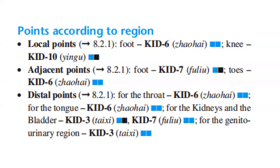For distal points: for the throat, we have Kidney 6; for the tongue, we have Kidney 6; for the kidneys and the bladder, we have Kidney 3 and Kidney 7; and for the genitourinary region, we have Kidney 3.